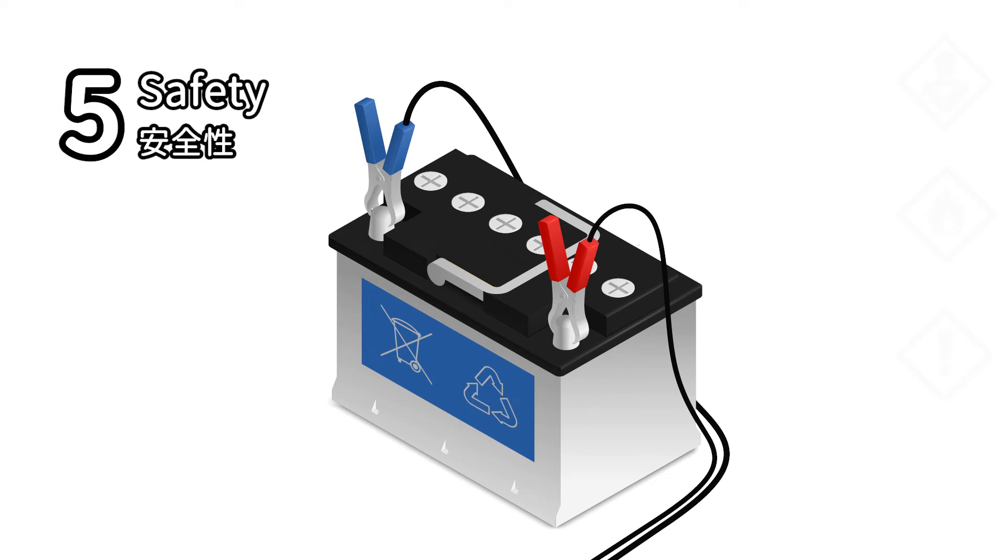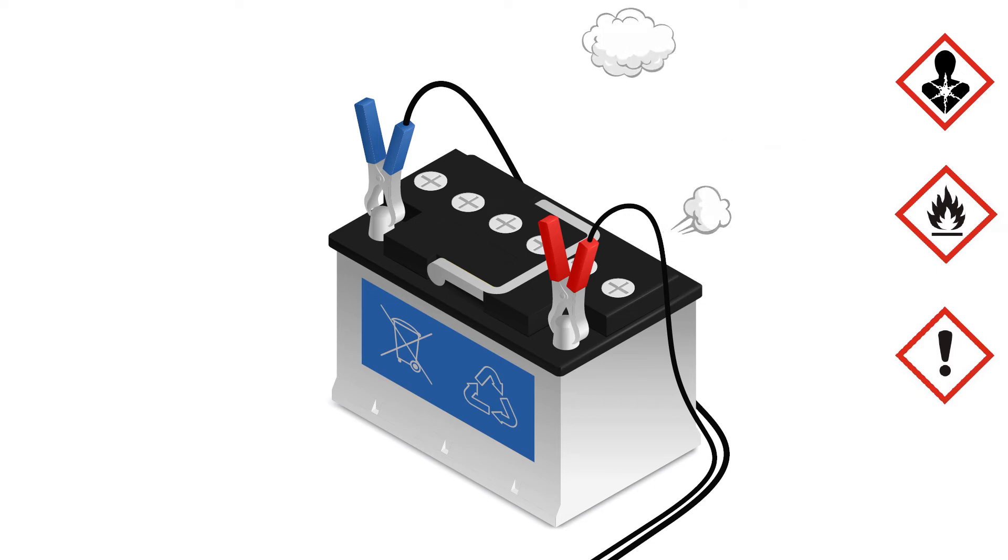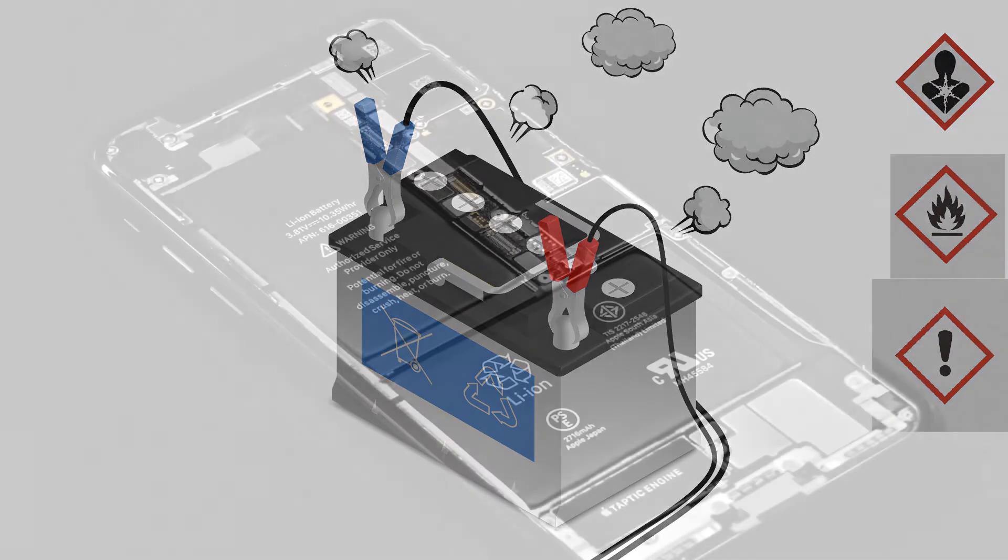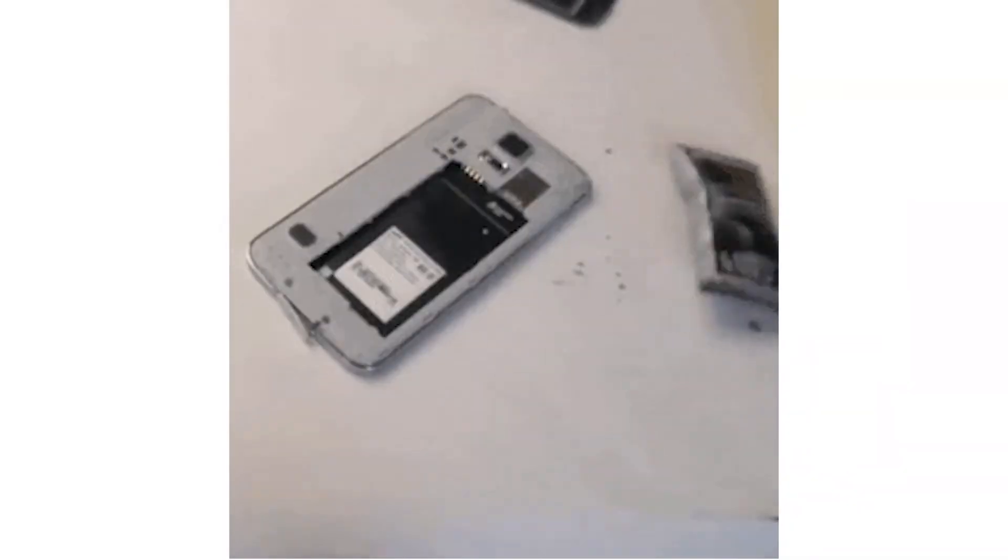5. Safety. Lead-acid batteries release sulfuric acid molecules into the air when they are charged. It irritates the respiratory tract, so there should be good ventilation when charging. Lithium-ion batteries also have high safety concerns because they contain flammable electrolytes. Damage or high temperature due to short-circuit will cause the battery to burn, or even explode in severe cases.